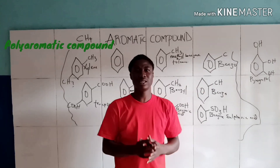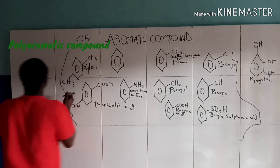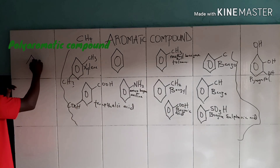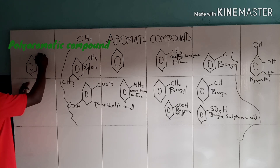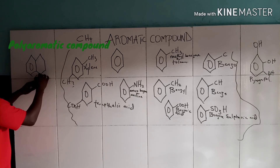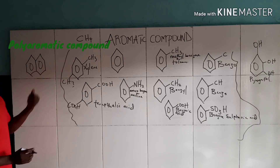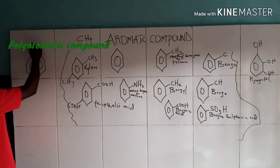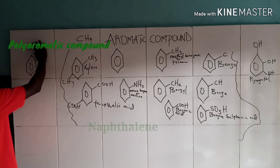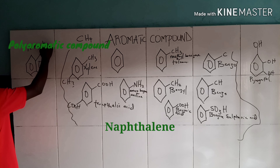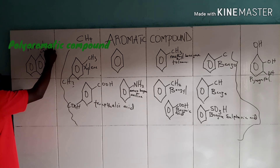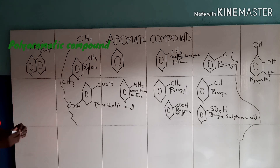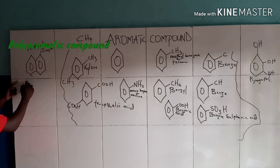Benzene is aromatic and we have examples of polyaromatic compounds. When one benzene structure is attached to another benzene structure, it is called naphthalene. Naphthalene is also commonly known as camphor.